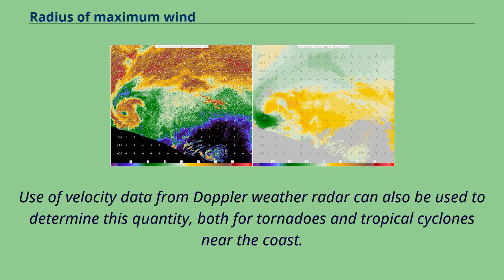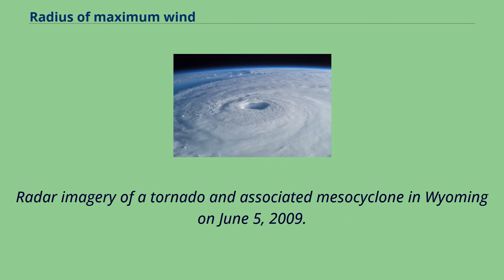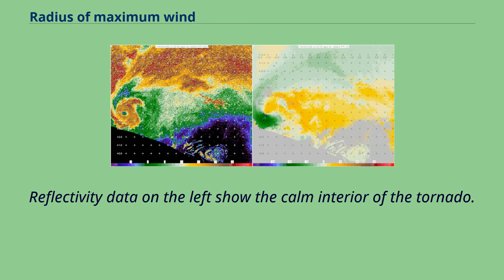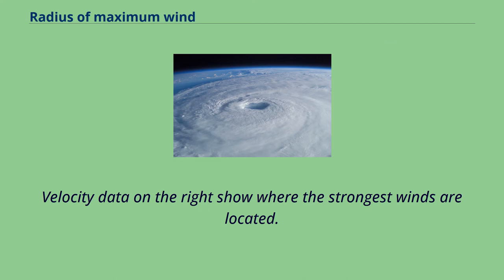Use of velocity data from Doppler weather radar can also be used to determine this quantity, both for tornadoes and tropical cyclones near the coast. Radar imagery of a tornado and associated mesocyclone in Wyoming on June 5, 2009 shows reflectivity data on the left indicating the calm interior of the tornado, while velocity data on the right shows where the strongest winds are located.